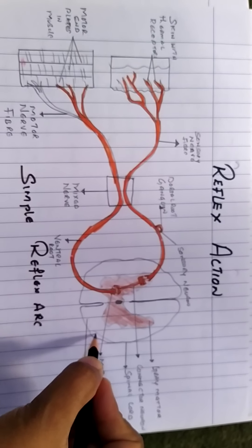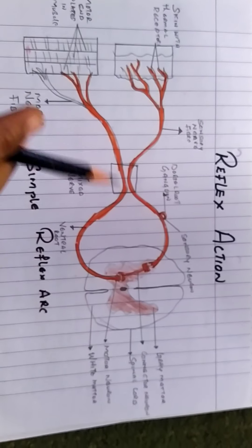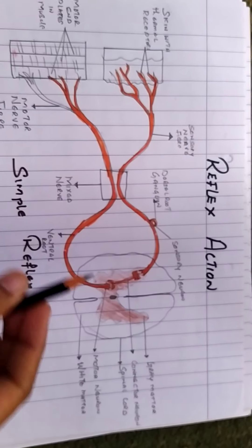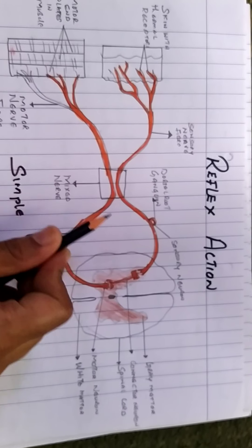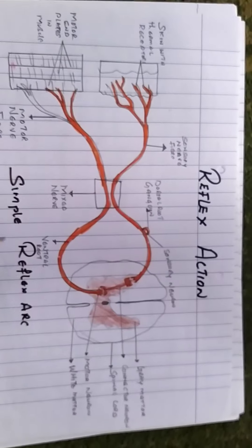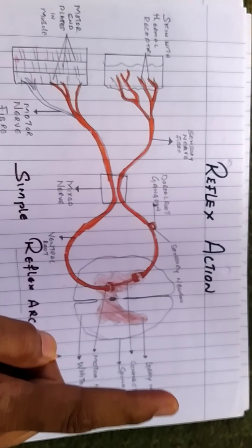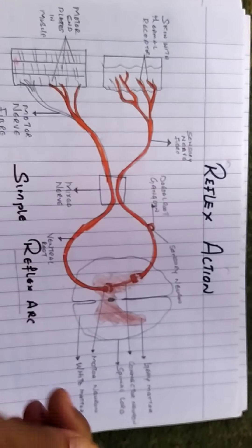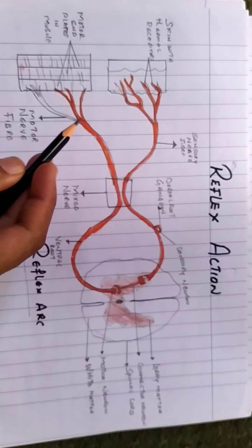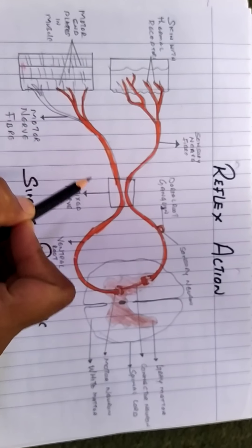This makes the reflex action a response that occurs at the level of the spinal cord without the brain even knowing. In that condition it is called the reflex action. The path through which the stimulus travels is called the reflex arc. As you can see here, this is the reflex arc diagram.